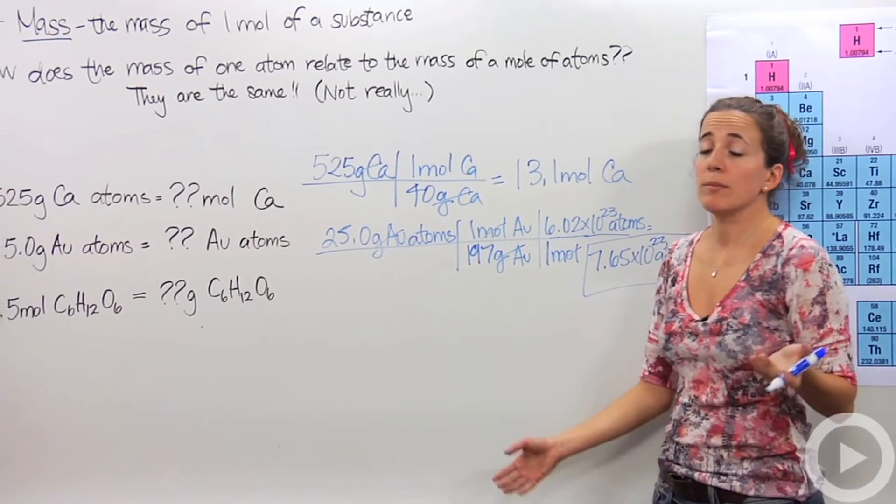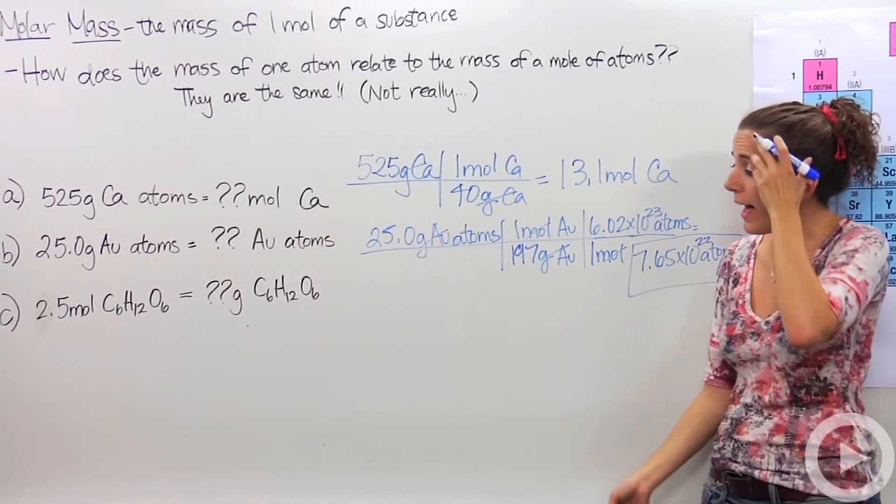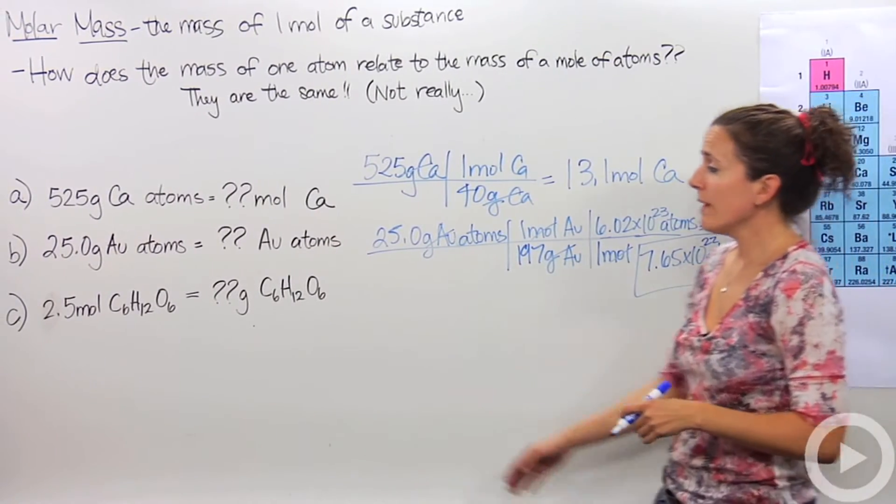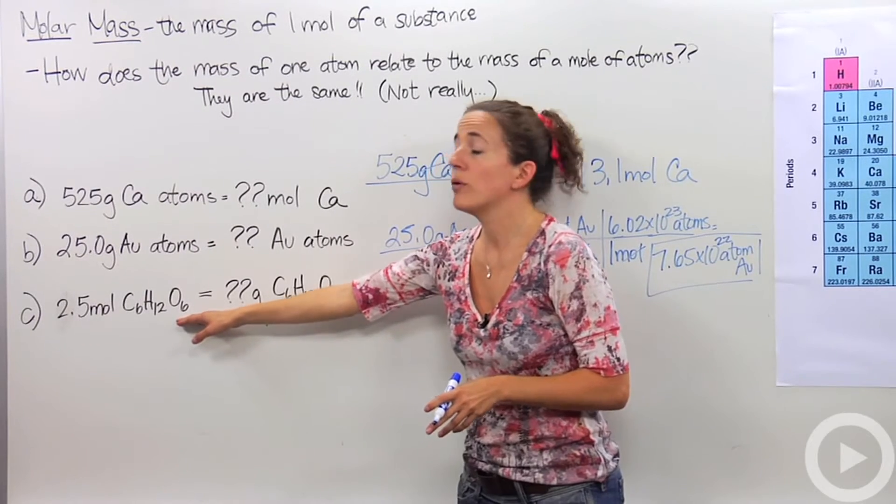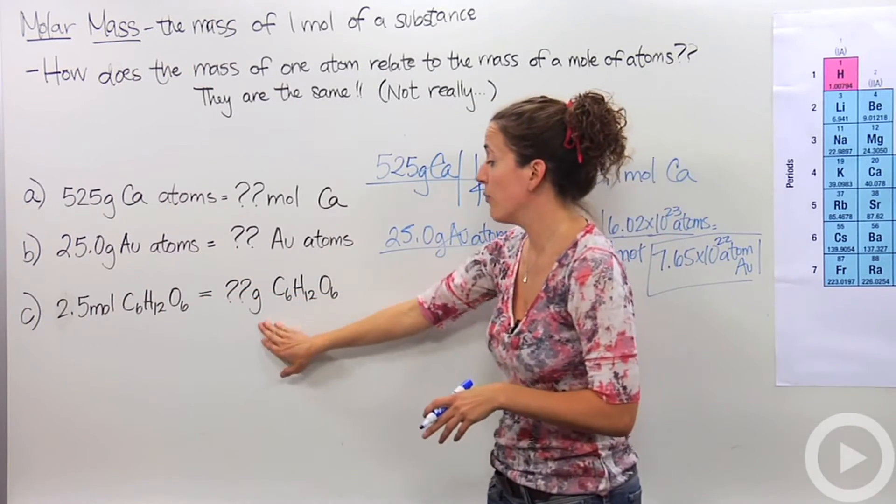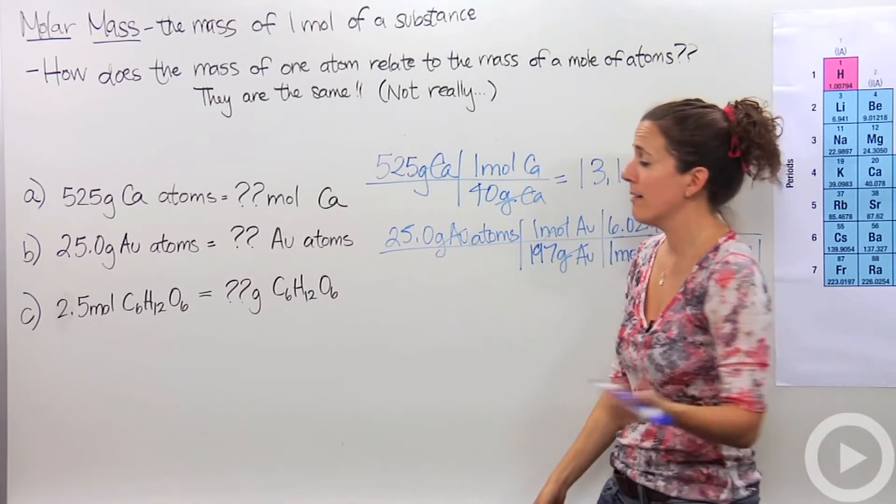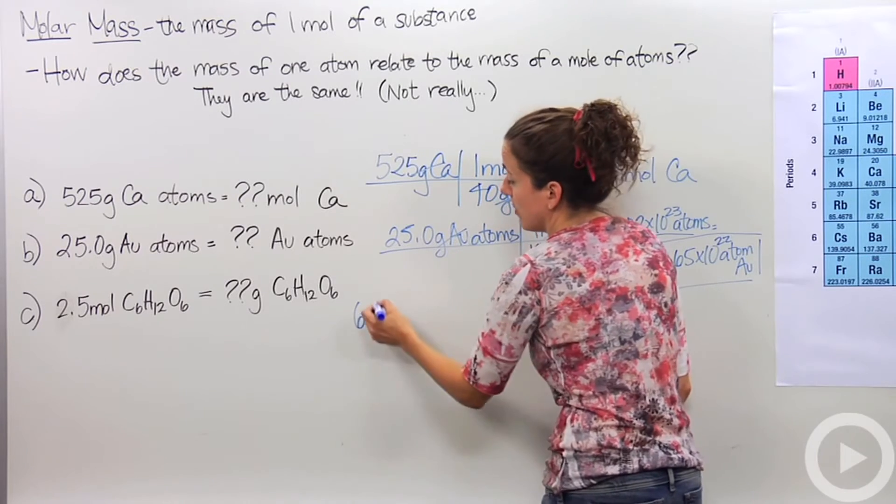That molar mass is very helpful. Alright, let's say instead of atoms, we're talking about molar masses of compounds. Those are actually more typically used than the molar mass of atoms. So, let's say we have 2.5 moles of glucose, or another word, C6H12O6. How much does that weigh? Well, we have to figure out the mass of 1 mole of glucose. How do we do that? So, we have to break it up into its atoms.